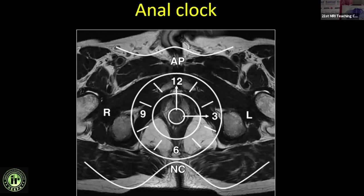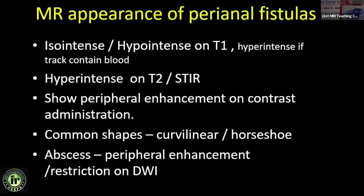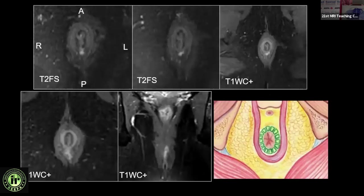Fistulas are typically hypo- or isointense on T1 and best seen on T2 weighted, T2 fat-saturated, or STIR images, where fat is suppressed and fluid is highlighted. They may appear bright on T1 post-operatively due to blood products. They show peripheral enhancement on contrast administration. Shapes can be linear, curvilinear, or horseshoe. Associated abscesses show peripheral enhancement and diffusion restriction on DWI.